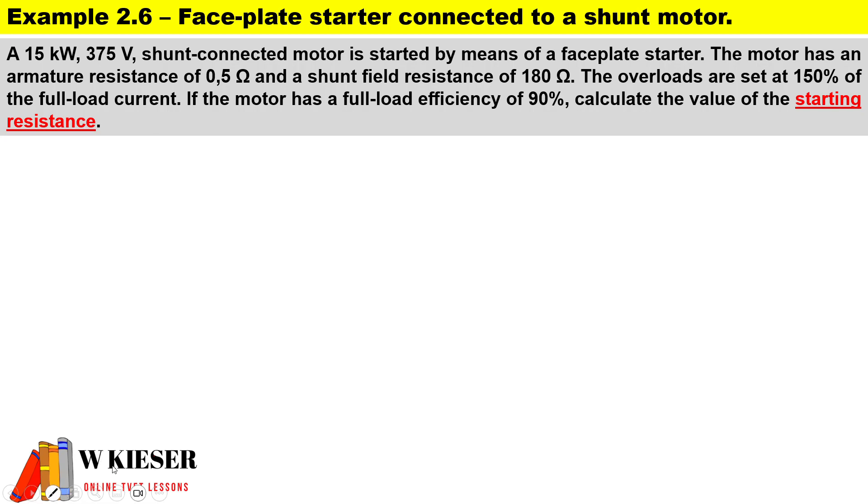To calculate the armature current, it's going to be Ia equals IL minus I shunt. It's a motor, so it's minus. Calculate the supply current, it's power over voltage, and for a motor we use input power. And we have V over R shunt.